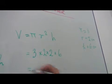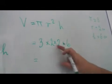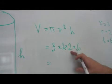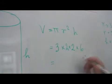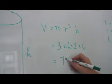So this is 3 times 2, times 2 times 6. 3 times 2 is 6, times 2 is 12, times 6 is 72. So 72.